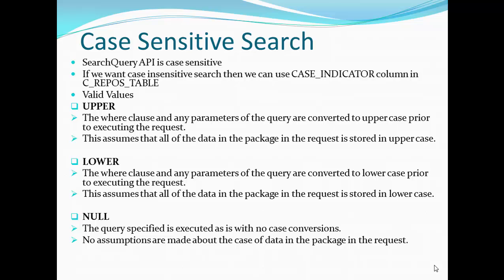If you want a case insensitive search, we have a column called case_indicator in the C_REPOS table — we have to populate that column with values such as UPPER, LOWER, or NONE. The issue with using UPPER is that all the columns in the package you are using must contain uppercase values in the database. If the data does not have uppercase in the database, then this search will not work. This is one constraint or restriction we have.